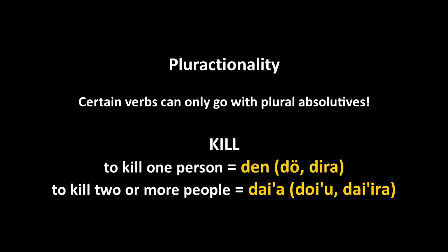In Chechen there's also something called pluractionality — a feature whereby certain verbs change their shape, or even have separate verbs, depending on whether their argument is singular or plural. So for a verb like 'to sit,' there's one verb for a single person sitting and a different verb for two or more people sitting. That's something found in a number of Amazonian languages but is virtually unseen in Europe and Asia outside of the Caucasus.